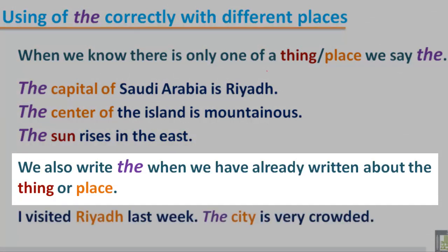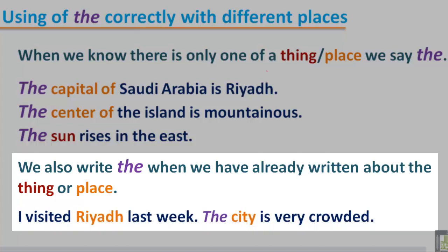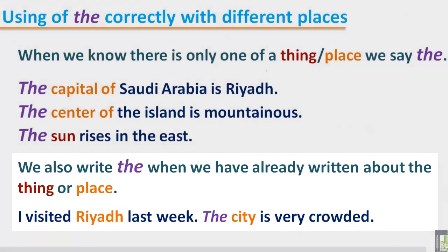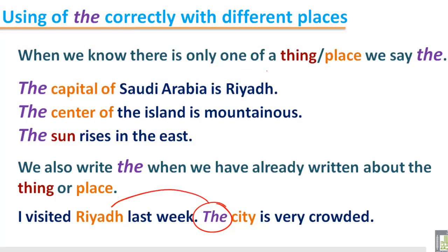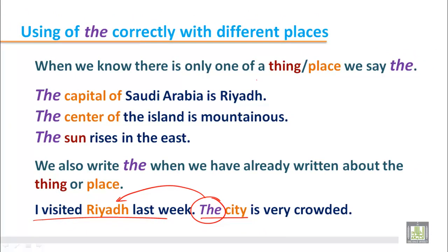We also write 'the' when we have already written about a thing or place. For example: 'I visited Riyadh last week. The city is very crowded.' Here, 'the city' refers to the city I already mentioned in my first sentence — Riyadh. So we put 'the' before the noun.